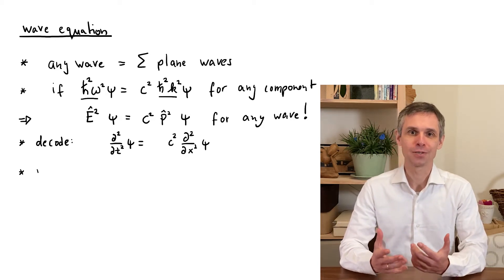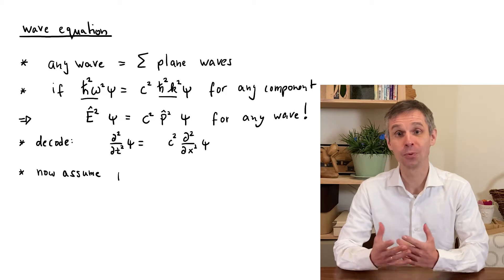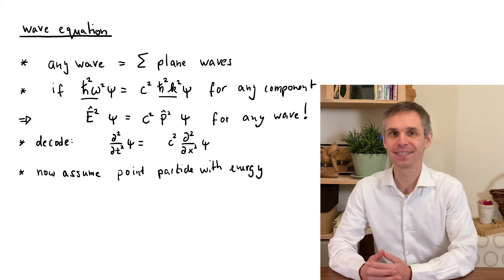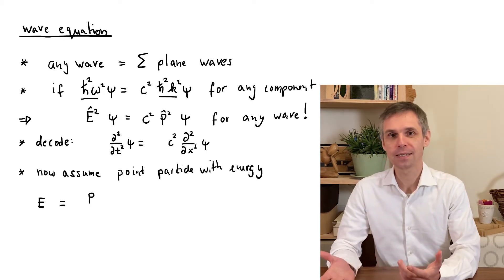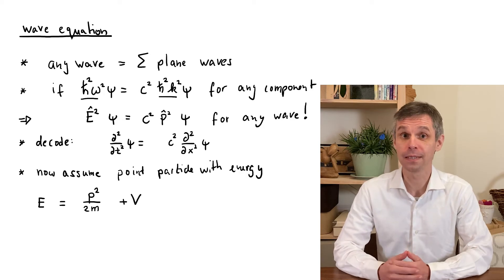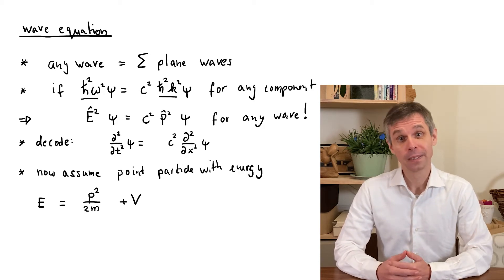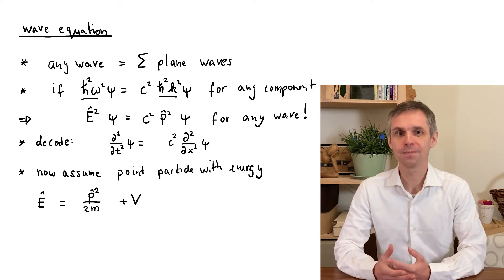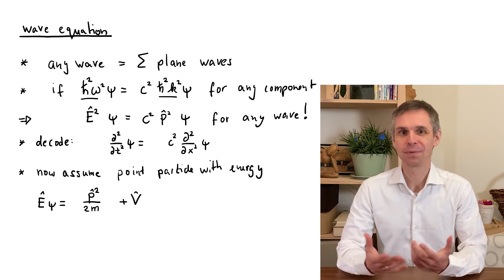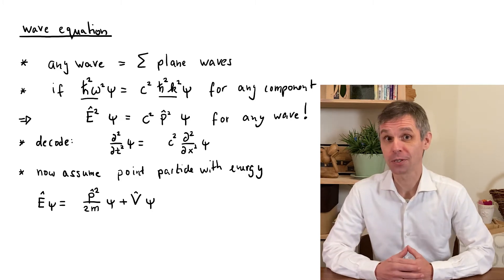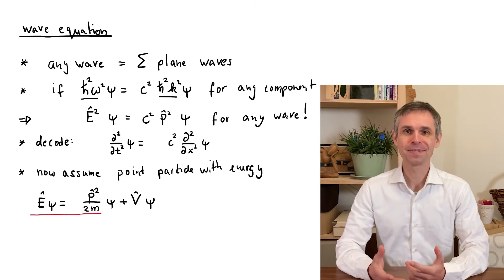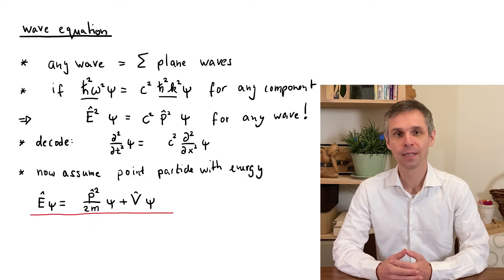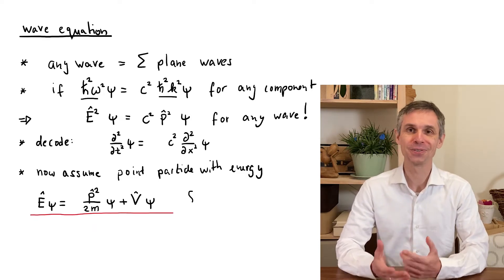Let us now have a look at what is going to happen if we apply these ideas to a point particle whose energy is the sum of kinetic energy and potential energy. Note that classically such a particle would not move with a constant speed. We can now convert this relation into a corresponding wave equation when we again replace the energy and momentum by the corresponding operators and apply these operators to a wave function. As it happens, this is indeed the correct quantum mechanical wave equation for a point particle moving in one dimension, the simplest version of the so-called Schrödinger equation.